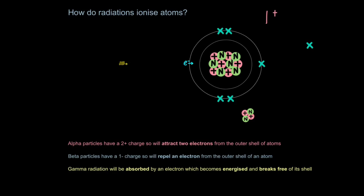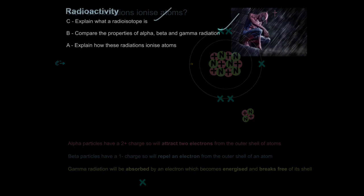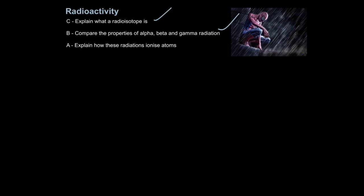Finally what gamma radiation does is if it strikes an electron it basically causes it to energize and then it breaks free from the atom. So gamma radiation will be absorbed by an electron which becomes energized and breaks free of its shell. So all three types of radiation will strip electrons away from the outer shell of atoms, alpha particles attract two electrons, beta particles repel one electron and gamma will energize an electron and cause it to break free. And that's how you explain how these radiations ionize atoms.